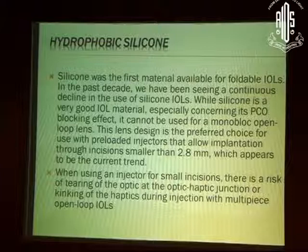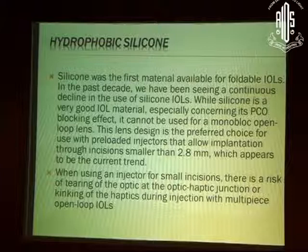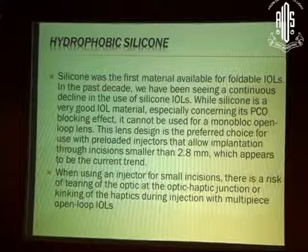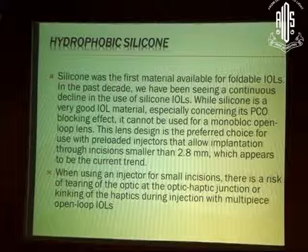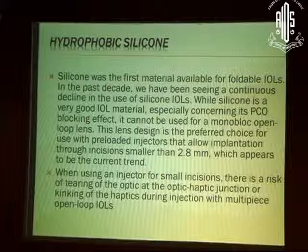The big advantage of silicone lenses is they are very resistant to injector forces. Zeiss lenses don't tear because they are silicone lenses. Lenses made of HEMA when you inject them very often will have one leg left outside. So if you are in a difficult case, try to select a lens based on either silicone or a hydrophobic material, because those lenses are tougher and don't break.